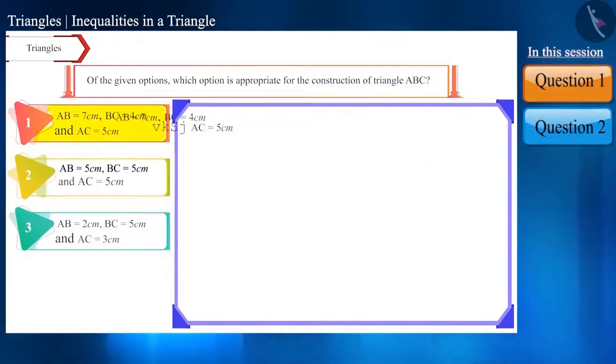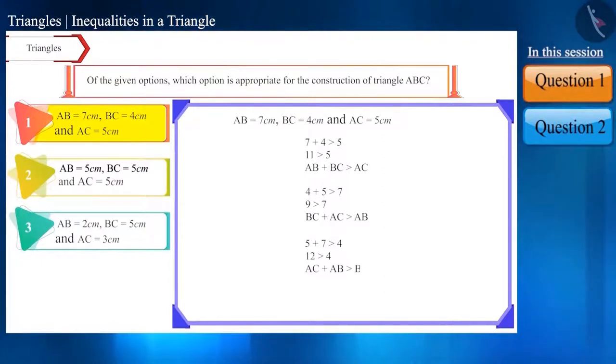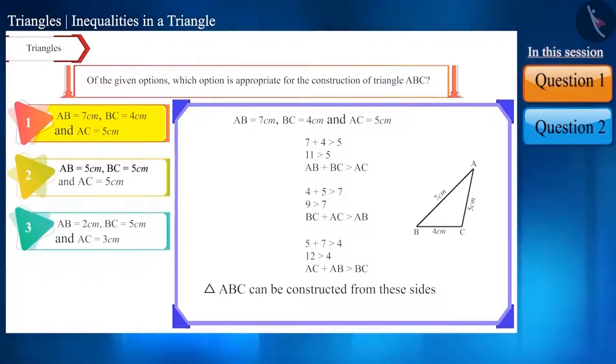Let's take the first option. The sum of side AB and side BC is greater than side AC. Similarly, the sum of side BC and side AC is greater than side AB, and the sum of side AC and side AB is greater than side BC. Therefore, triangle ABC can be constructed from these sides. Therefore, according to the question, this option is correct.